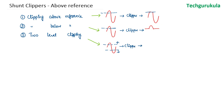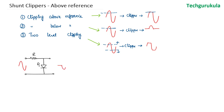In this video, as mentioned, we're going to see only shunt clippers — specifically above-reference clippers. We'll start with the known circuit: a resistor and diode connected in shunt to the output. We have seen that this gives us only the negative half of the wave, meaning the positive half is clipped.